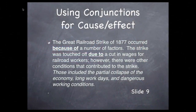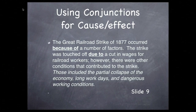The Great Railroad Strike of 1877 occurred because of a number of factors. The strike was touched off due to a cut in wages for railroad workers. However, there were other conditions that contributed to the strike. This included the partial collapse of the economy, long work days, and dangerous working conditions.